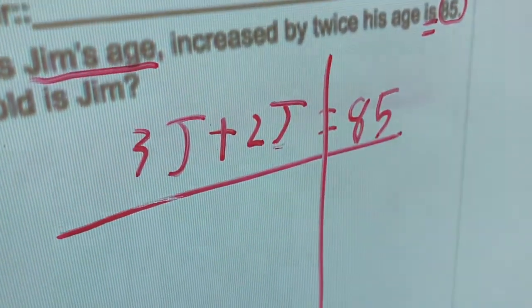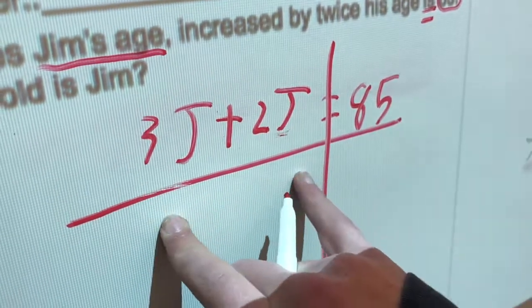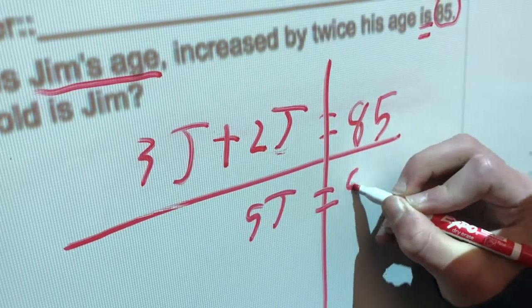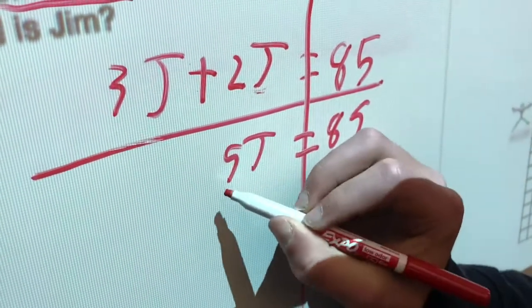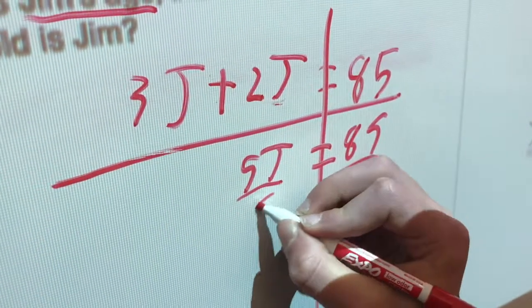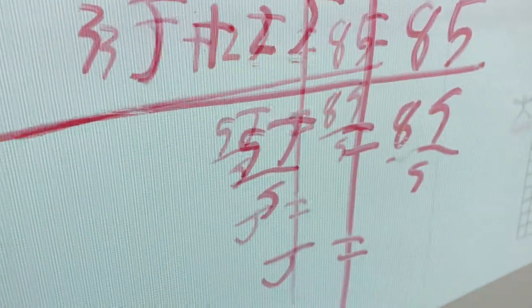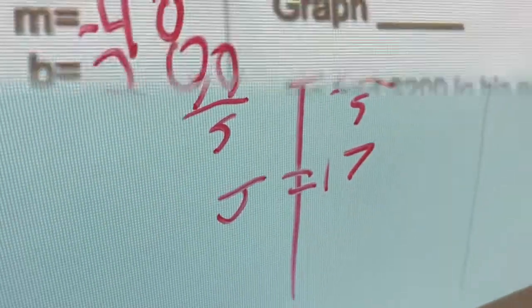Draw our divider. And then we're going to add all the J's together. So that would be 5J equals 85. And then we're going to divide it by 5. So everything is divided by 5. 17. 17. Yeah, good. 17 is the answer. Nice.